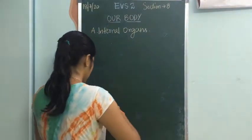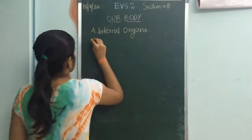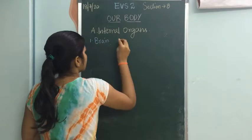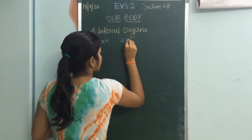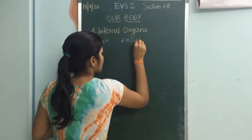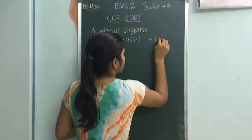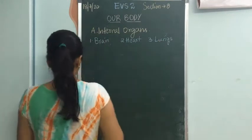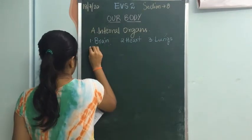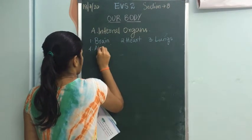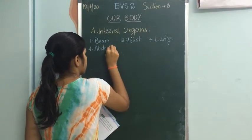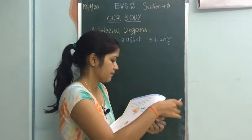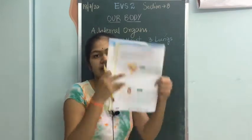In this class we are discussing four important internal organs. The four internal organs we are going to study are: brain, heart, lungs — there are actually two lungs — and the abdomen. We will study each of them.